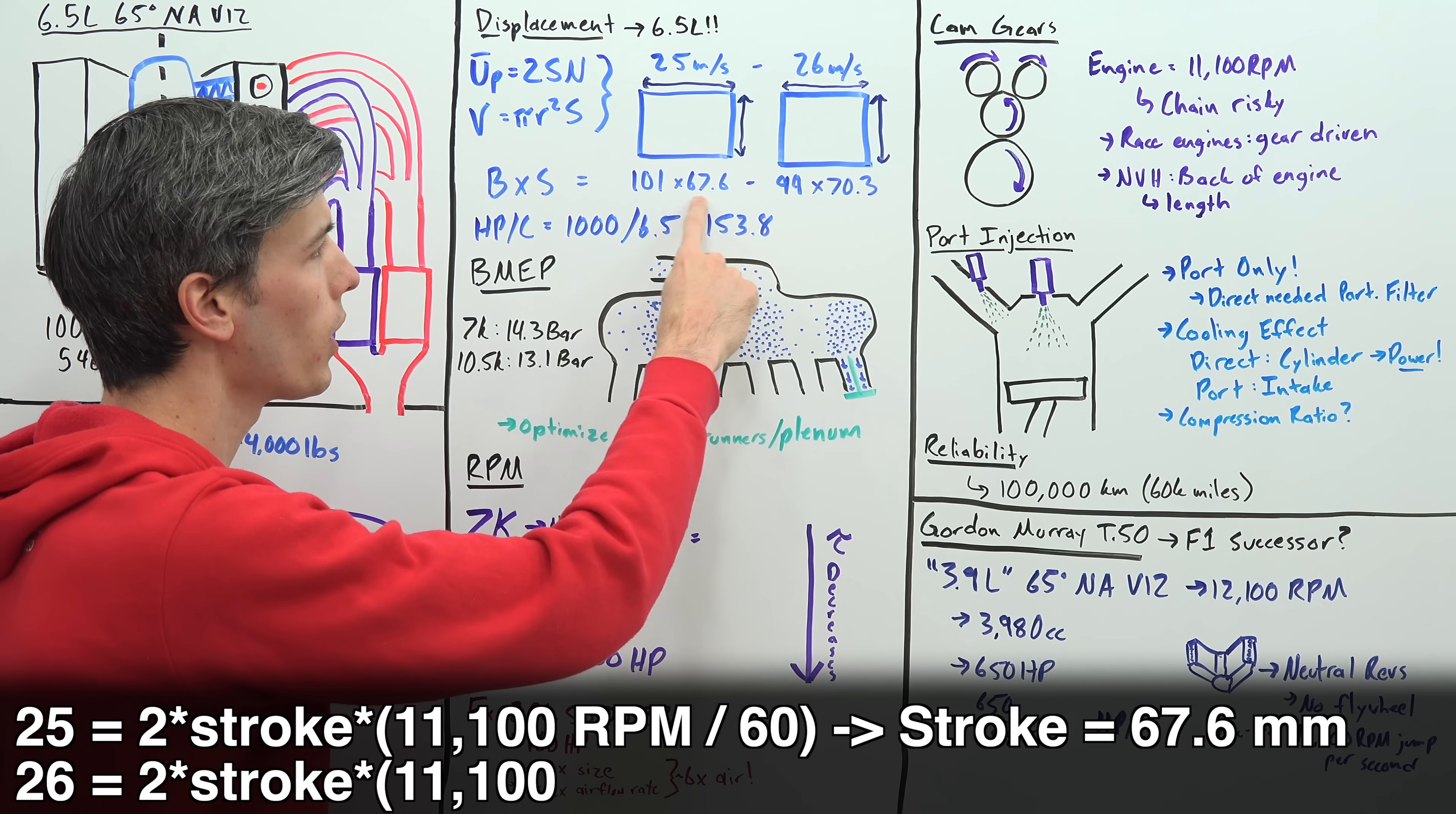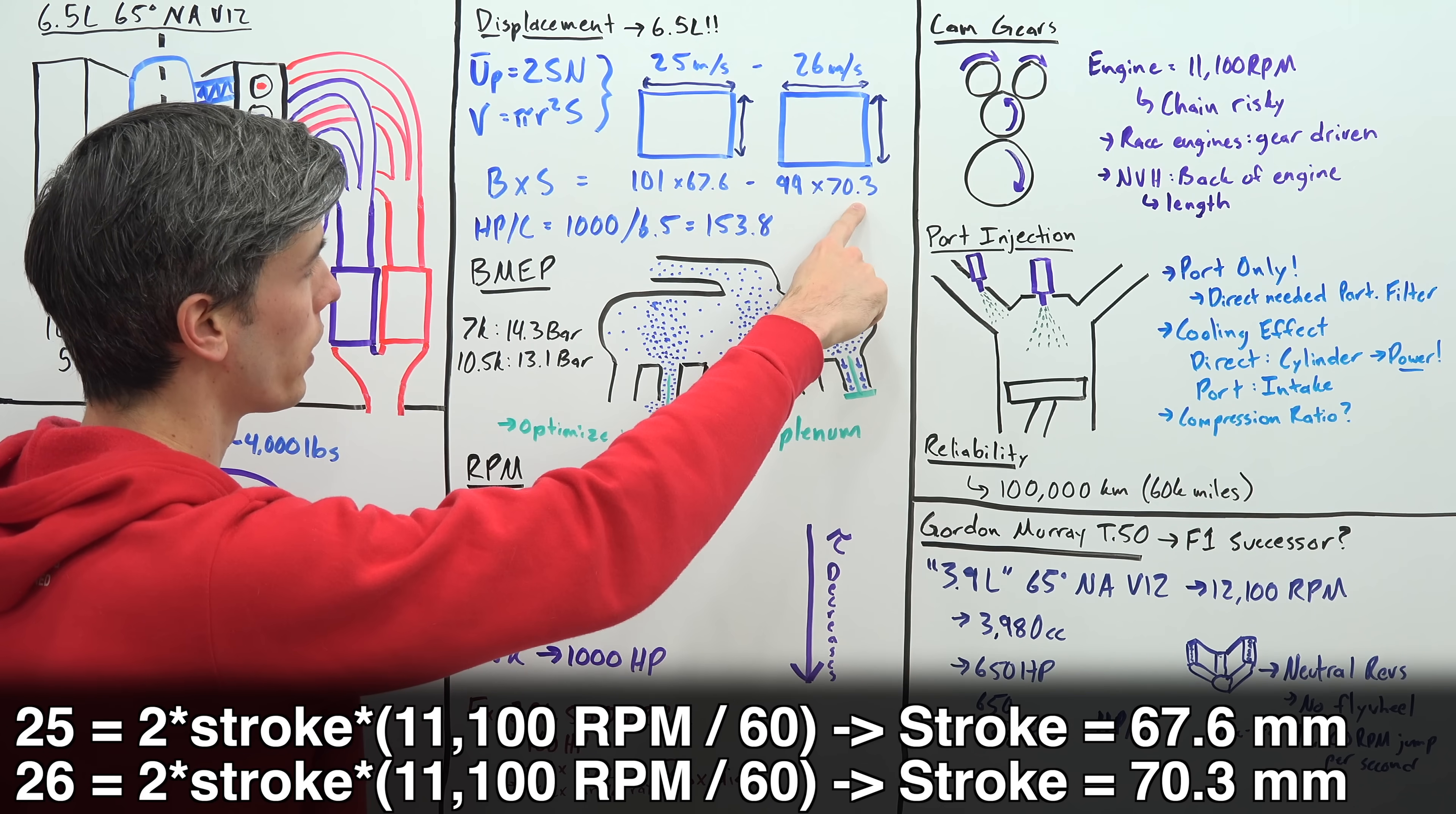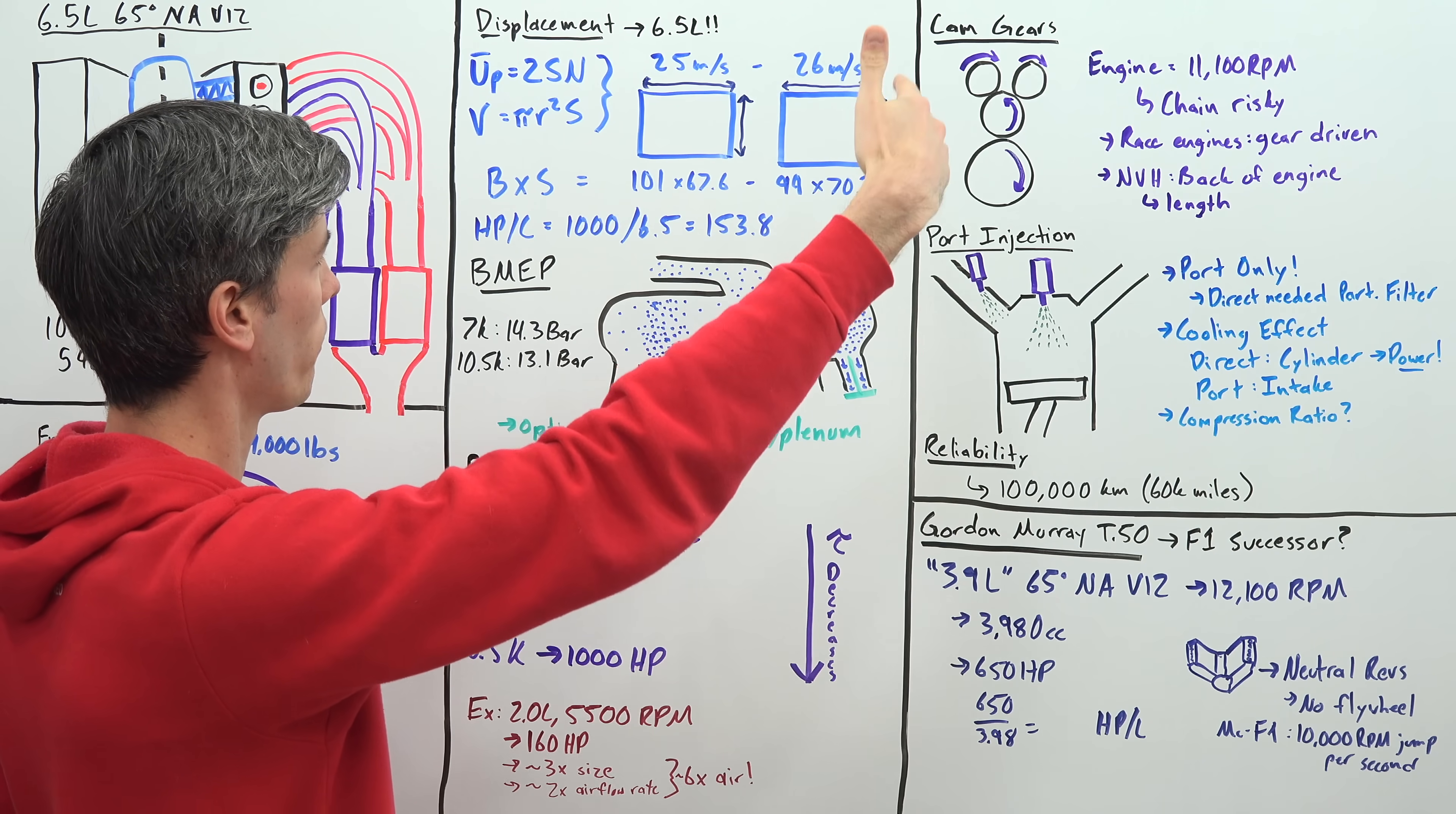So it's going to be somewhere between 67.6 millimeters and 70.3 millimeters, so a fairly short stroke which is fairly obvious it would have a short stroke and that way it can rev up really high.